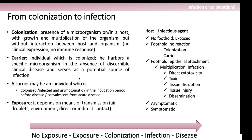The carrier can be an individual who is colonized, infected but asymptomatic, in the incubation period before the disease, or a patient who is convalescent from an acute disease. Exposure depends on the means of transmission like droplets, environment, and direct or indirect contact. Initially the organism gets a foothold; once there is a foothold it results in colonization or a carrier state. But once it goes deeper and gets attached to the epithelium, there is a chance of infection, leading to direct cytotoxicity, toxin production, tissue disruption, injury and dissemination, which can be either symptomatic or asymptomatic. So there is a gradual progression from no exposure to disease process, with colonization somewhere in between.